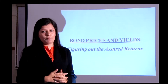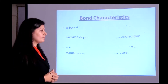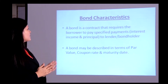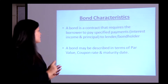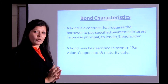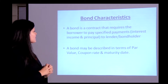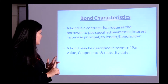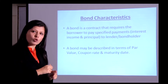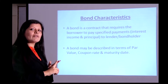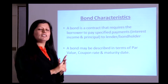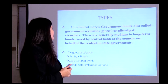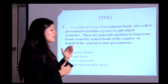A bond is a contract that requires the borrower to pay a specified payment to the lender or bondholder. A bond may be described in terms of par value, coupon rate, and maturity date. Par value is also called face value; coupon rate is also called interest rate; and maturity date is the time to repay the money back.